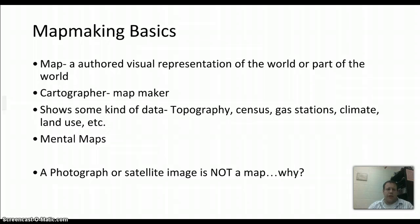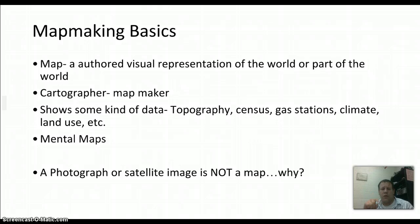Let me take just two minutes to talk about maps. We'll cover maps more on Monday and Tuesday in class. A map is nothing more than an authored visual representation of the world. Two big ideas there: 'authored' means somebody has to make it — a satellite image is not a map because nobody made it. A map is a creation with an author and thought behind it. That cartographer, that map maker, shows us some kind of data.